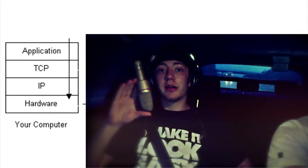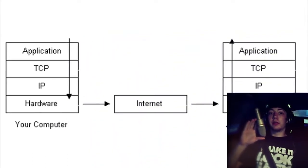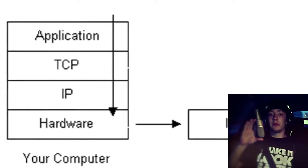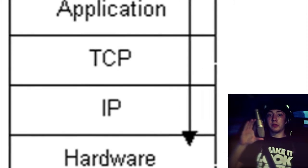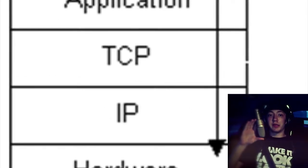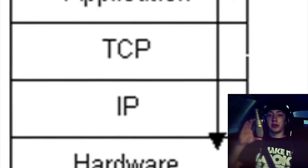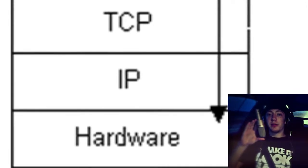Three: the packets go through the application layer and continue to the TCP layer. Each packet is assigned a port number, because we need to know which program on the destination computer needs to receive the message, as it would be listening on a specific port. Four: after going through the TCP layer, the packets proceed to the IP layer, where each packet receives its destination address.